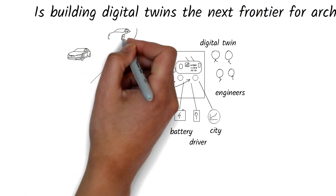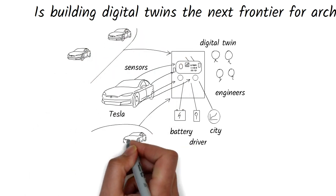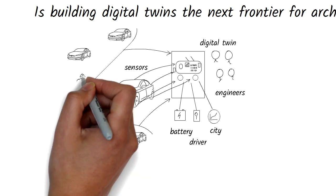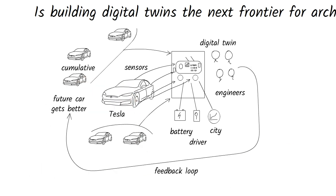Cumulated across many such digital twin instances, engineers can then refine the future car design to perform even better, and the loop feeds on itself.